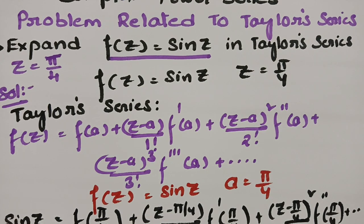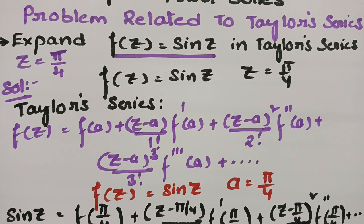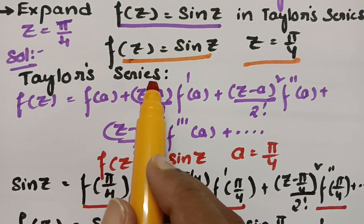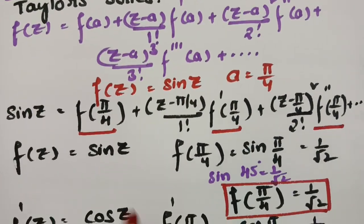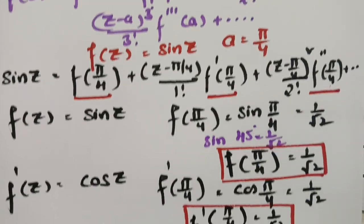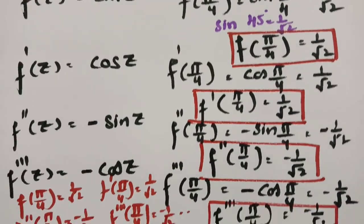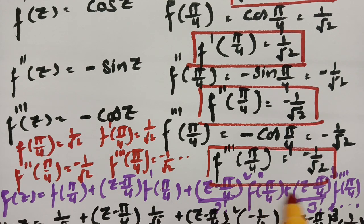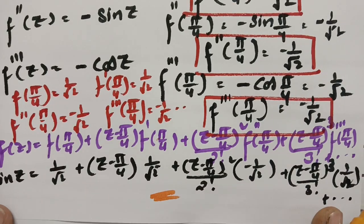In the question, f(z) = sin(z) and z = π/4 were given. According to the Taylor series, we wrote the expansion, substituted a = π/4, computed derivatives to get f(π/4), f'(π/4), f''(π/4), and f'''(π/4), and substituted those values to obtain the final Taylor series expansion.